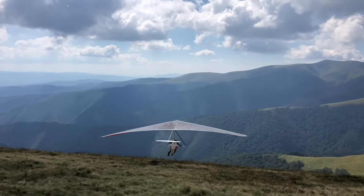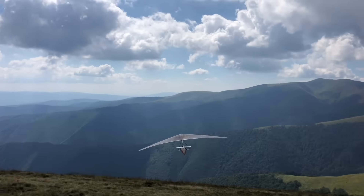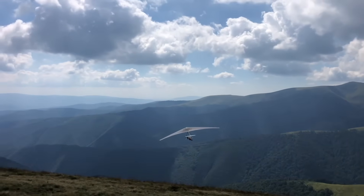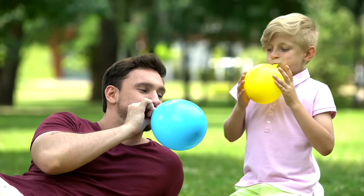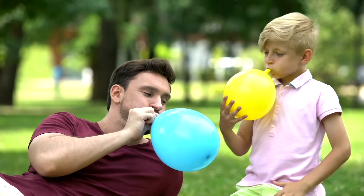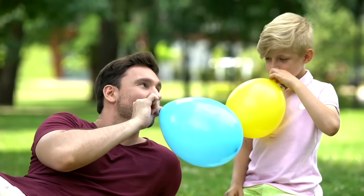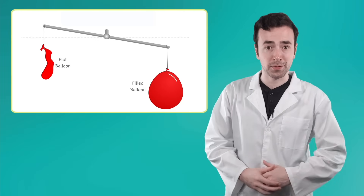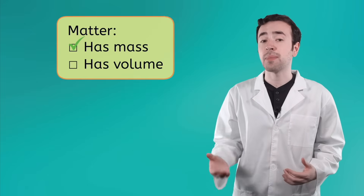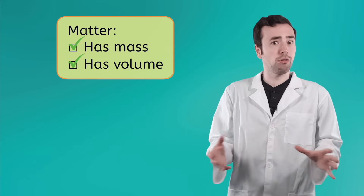Okay, here's a tough one for you. Is air matter? Even though it can be hard to tell, air has mass and volume, so it is made of matter. Imagine blowing up a balloon — as you blow into it, the balloon expands. Air is filling the space inside of it, which shows that it has volume. Air also has mass. If you take a filled balloon and put it on a balance with an empty balloon, you will find that the filled balloon has more mass, and that must be coming from the air. So since air has mass and volume, air and all gases, in fact, are matter.